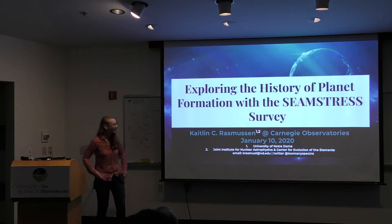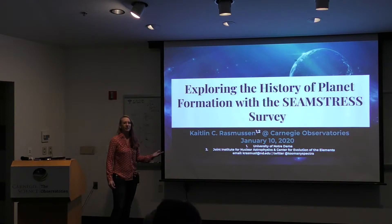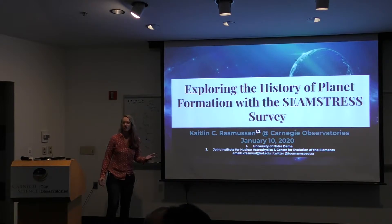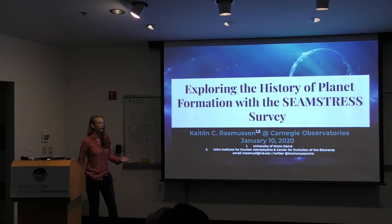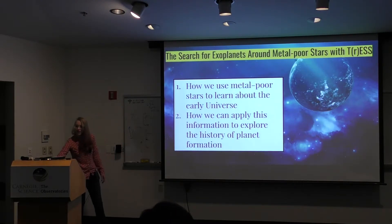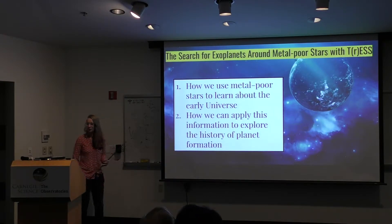All right. The field of exoplanets is asking, what else is out there? The field of metal-poor stars is asking, where did everything come from? When you combine these two lines of questioning, you get a very powerful tool for looking into the early universe. This talk today has two parts: how we use metal-poor stars to learn about the early universe, and how we can apply this information to explore the history of planet formation.